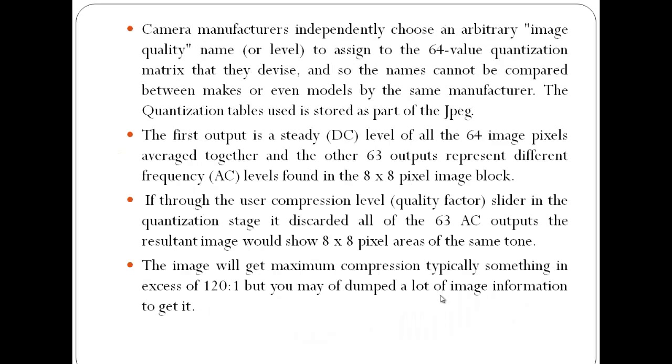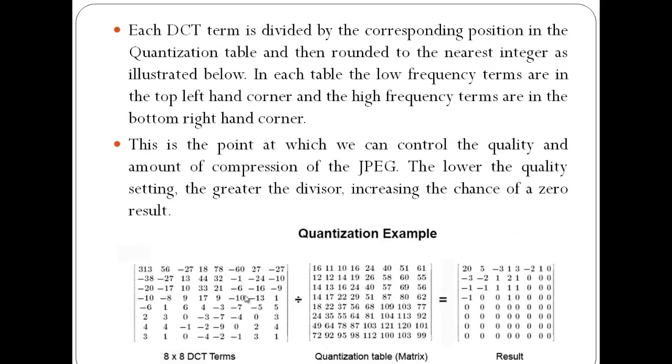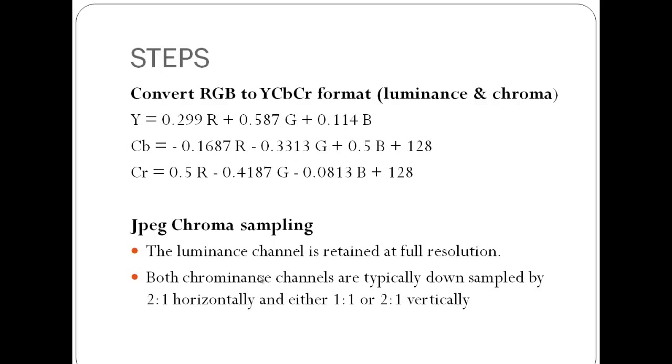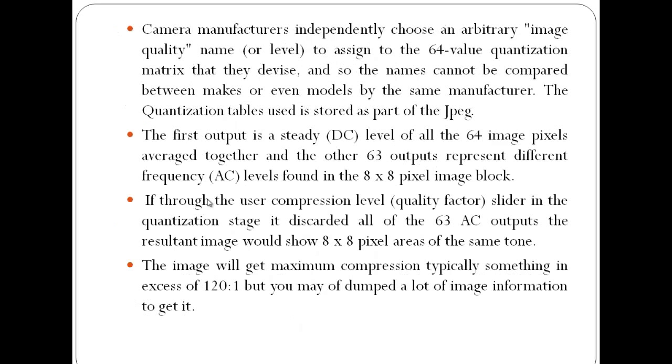Camera manufacturers independently choose an arbitrary image quality name or level to assign to the 64-value quantization matrix that they devise. The quantization tables used are stored as part of the JPEG, and different matrices are defined by different camera manufacturers for the Y, Cb, and Cr channels.